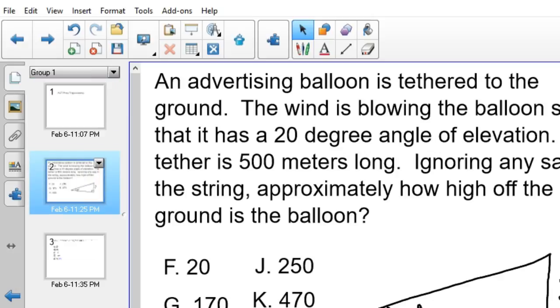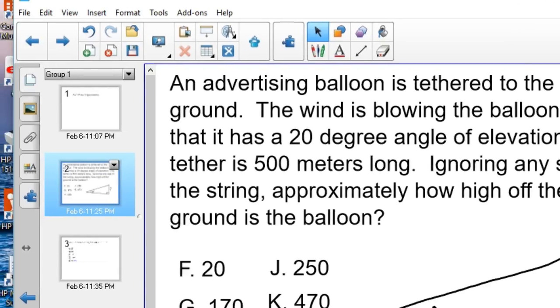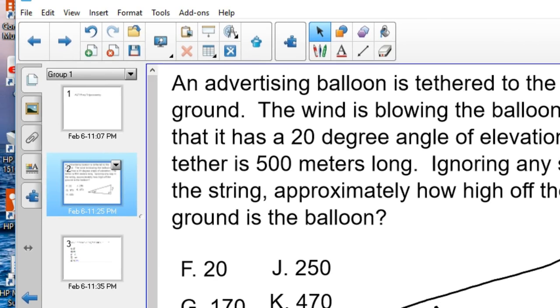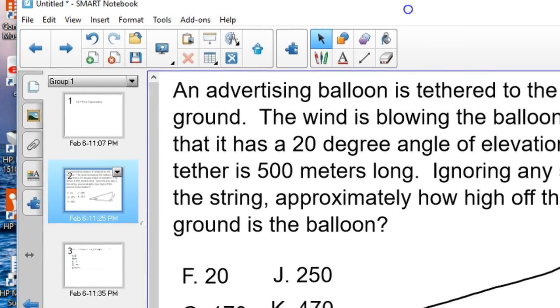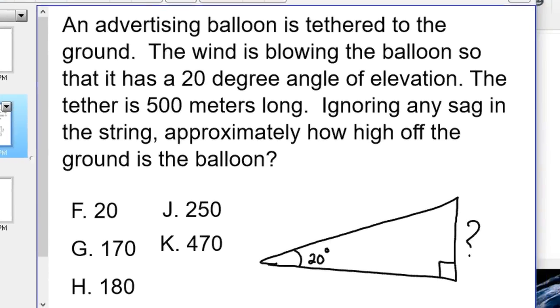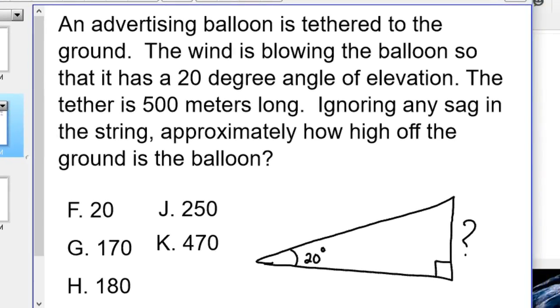So here's the first problem. An advertising balloon is tethered to the ground. The wind is blowing the balloon so that it has a 20 degree angle of elevation. The tether is 500 meters long, ignoring any sag in the string. Approximately how high off the ground is the balloon?